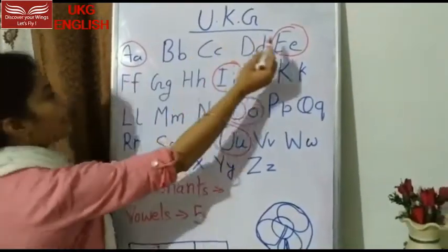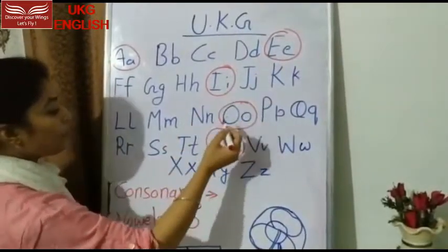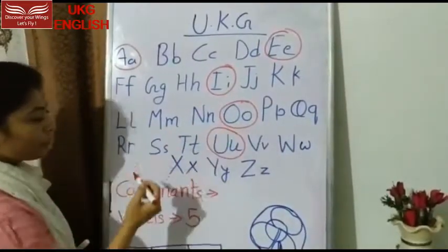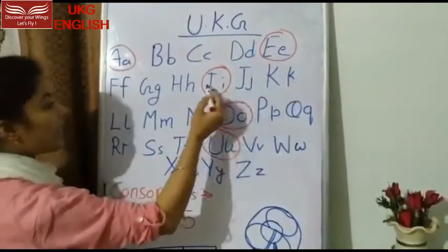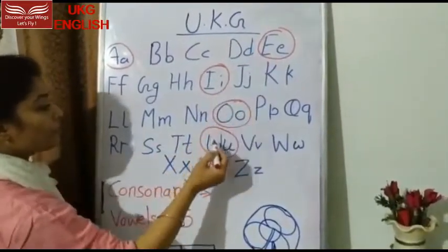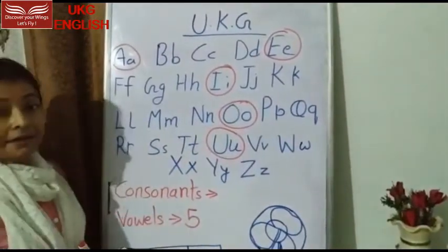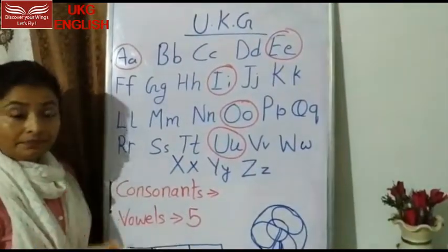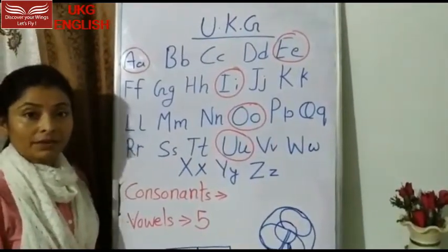A, E, I, O, U. A, E, I, O, U. These are our five vowels.